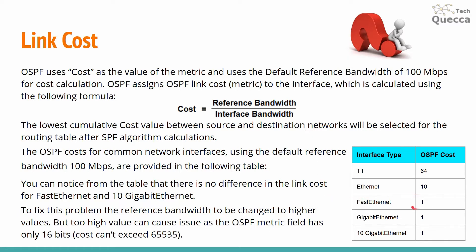As you can notice from this table, there is no difference between OSPF cost for a Fast Ethernet interface and OSPF cost for a 10 Gigabit Ethernet interface. To fix this problem, the reference bandwidth needs to be changed to higher values. However, too high a value can cause issues as the OSPF metric field has only 16 bits, so cost cannot exceed 65535.